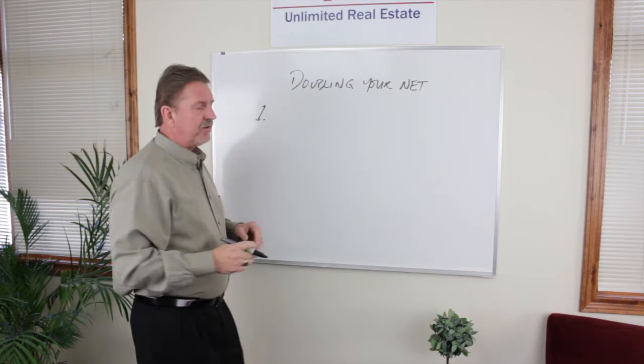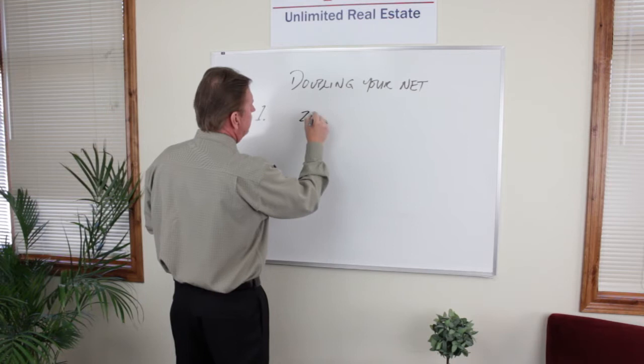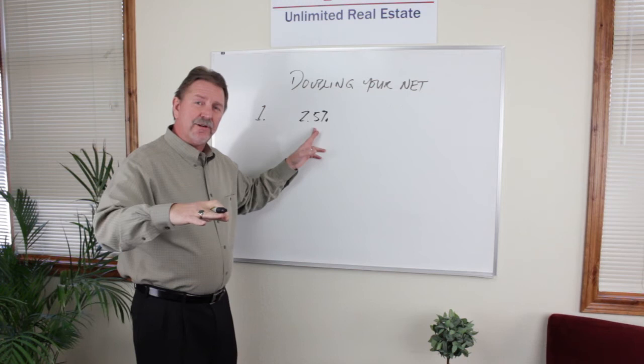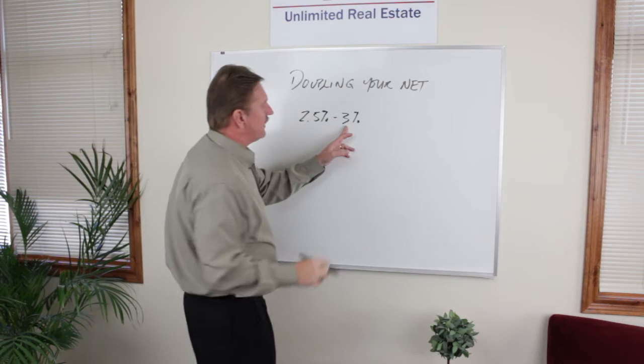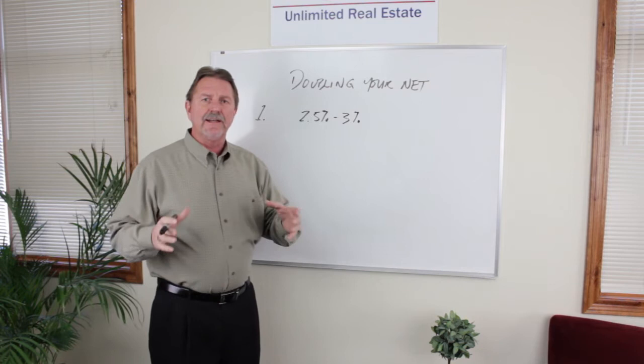Now, the first thing I want you to think about is what is the commission that you're currently earning? In the United States today, the average commission is about 2.5%. Unfortunately, it's gone down over the last five years. I want you to think about making sure you get 3% as much as you possibly can. I know that you can't do it all the time. I get it, I understand.